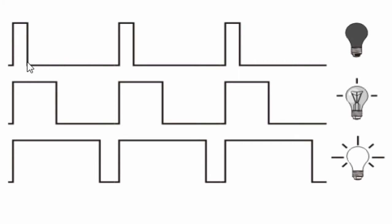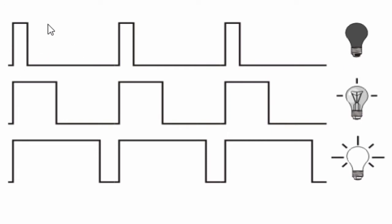The duty cycle can be anywhere between zero, when the signal is always off, to one, when the signal is always on. If our signal is five volts while on and zero volts while off, then by changing the duty cycle, the amount of energy transferred to the load can be changed from zero to five volts. This method is commonly used for controlling speeds of DC motors, brightness of lamps, sine wave inverters, digital to analog converters, and so on.